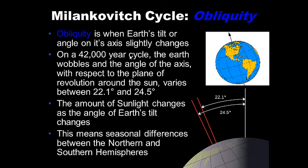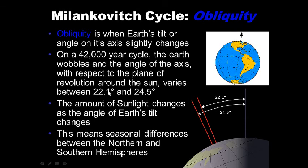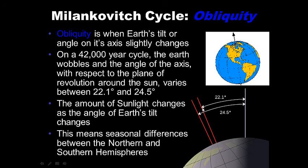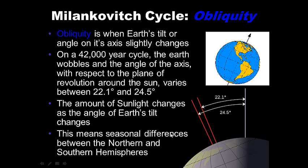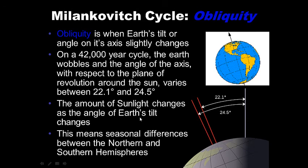Obliquity is when Earth's tilt or angle on its axis slightly changes. This is a 42,000-year cycle — Earth wobbles in the angle of its axis with respect to the plane of revolution around the sun, varying between 22.1 and 24.1 degrees. Earth's tilt varies between 22.1 and 24.5 degrees, meaning seasonal differences can become more or less extreme. Because seasons are caused by Earth's tilt, if this tilt changes, seasonal differences between the northern and southern hemispheres get worse or less severe.